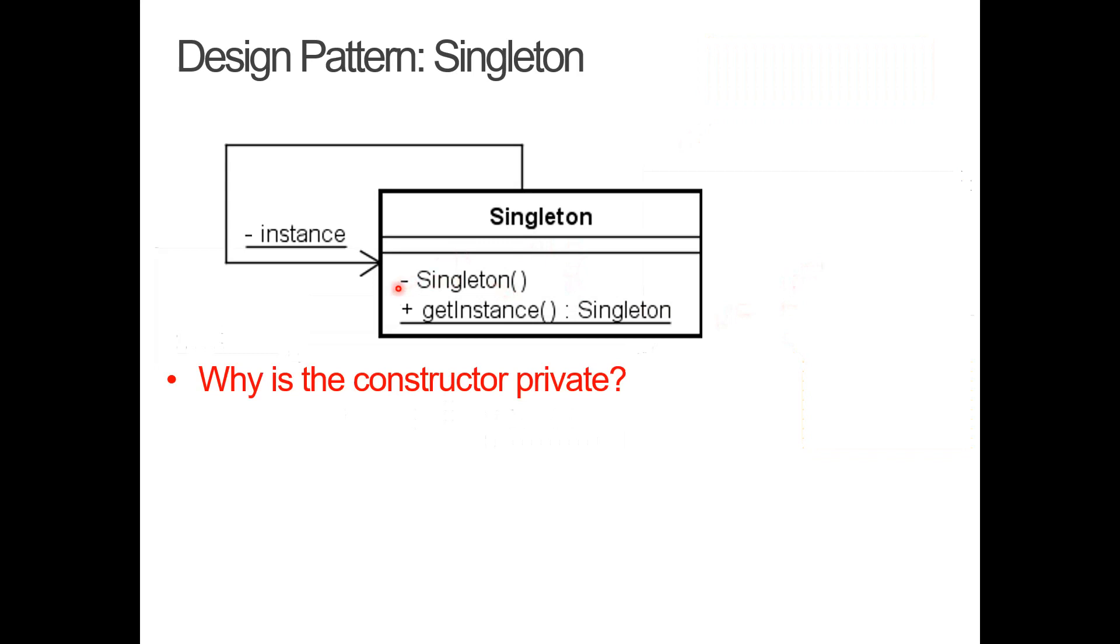So, second point here, the constructor is marked as private. And we do this to control how and when we create a new instance of this singleton class. I don't want any other classes to be able to create new instances because that would break the idea of having one instance only. So, we create the constructor. We make it private so we can define when to create a new instance.